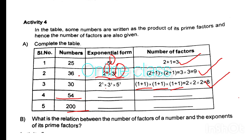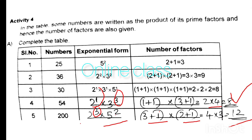What is the relation between the number of factors of a number and the exponents of its prime factors? The number of factors equals the product of each exponent plus 1.